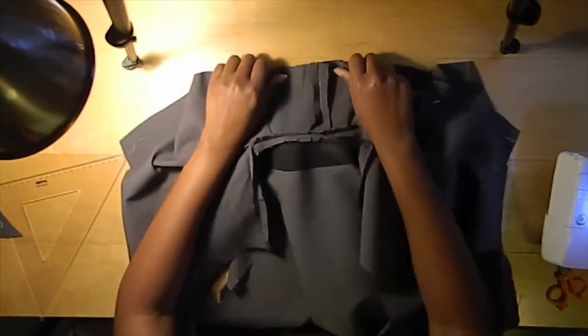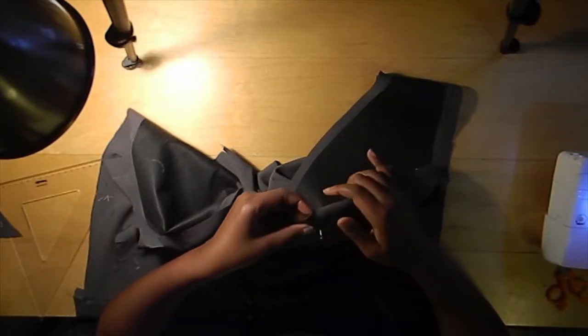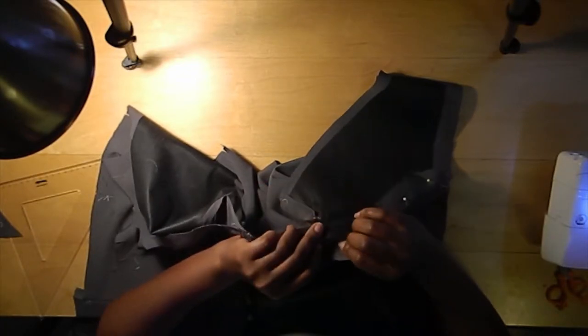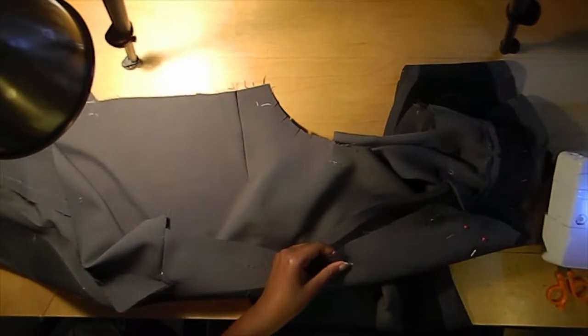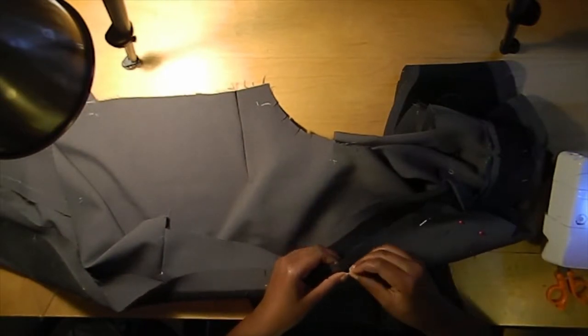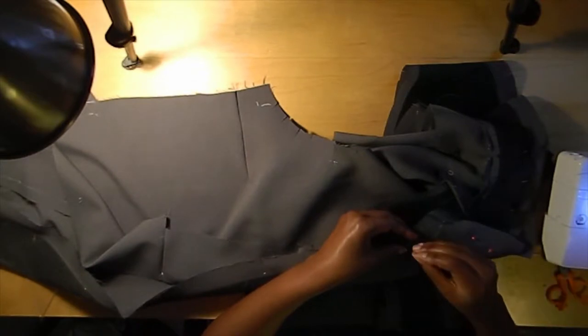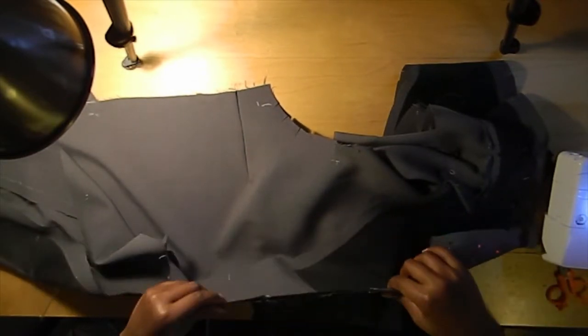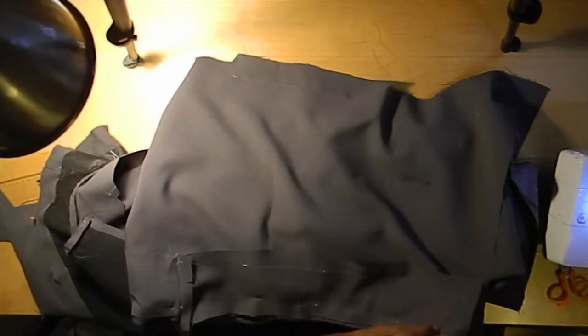Now I'm going to attach the outer collar part to the main body, and again I pin everything down before I sew it. This time we are pinning the whole length from the inside all the way from the sides.